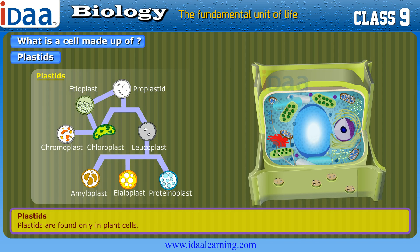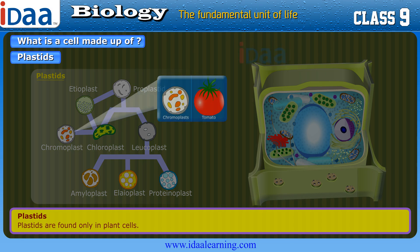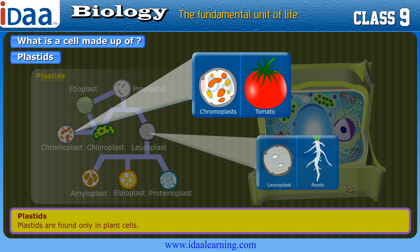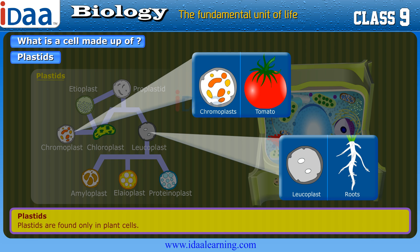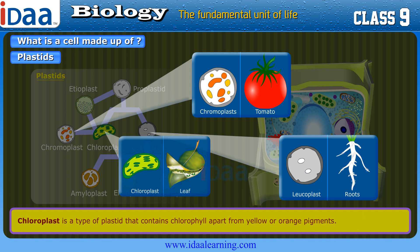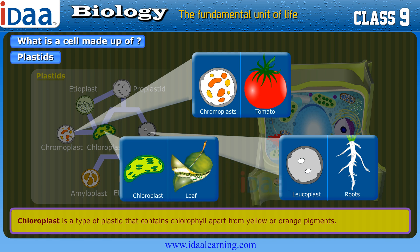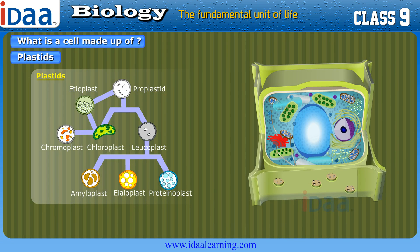Plastids are found only in plant cells and also have their own DNA and ribosomes. Chromoplasts are colored plastids, and leucoplasts are white or colorless plastids. Leucoplasts store materials such as starch, oils, and protein granules. Chloroplast is the type of plastid that contains chlorophyll apart from yellow or orange pigments. The primary function of chloroplast is to trap solar energy and convert it into chemical energy to perform photosynthesis.